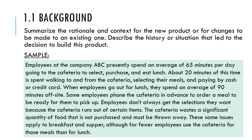Section 1.1 is Background. In the background, we summarize the rationale and context for the new product — whether you are building an entirely new product or proposing changes to an existing system. In both cases, you describe the history or situation that led to the decision to build this product — the past problems that users, customers, or stakeholders are facing that motivated the new product.